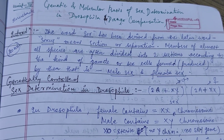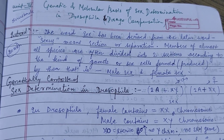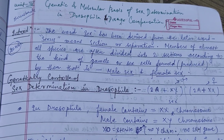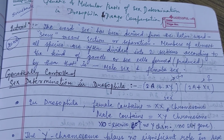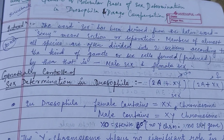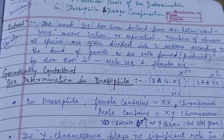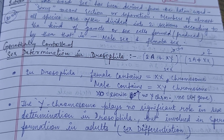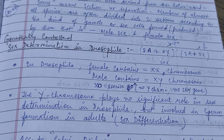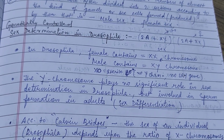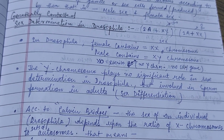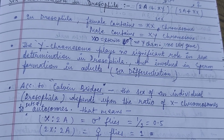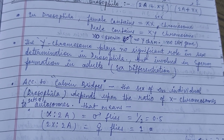Hello friends, today through this video we will discuss the topic dosage compensation and sex determination in Drosophila. Drosophila is also called the fruit fly. In Drosophila, the female contains the XX sex chromosome and the male contains the XY chromosome, similar to humans. When it is XO, that is a sterile male.